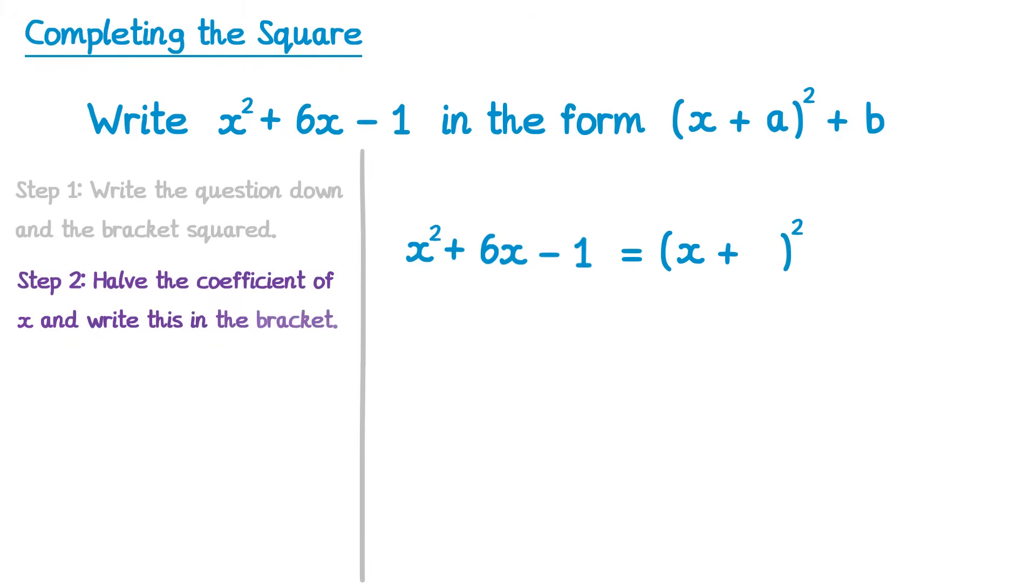Step 2 is to half the coefficient of x, and write this in the bracket. The coefficient of x is currently 6, so we'll half that and get 3, and put that in the bracket. The next step, square the number in the bracket, and subtract it. So that number we just wrote, plus 3, we're going to square it, and take it away. 3 squared is 9, so it's take away 9.